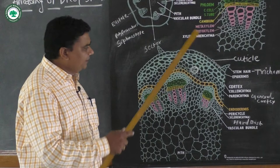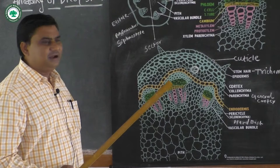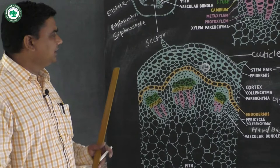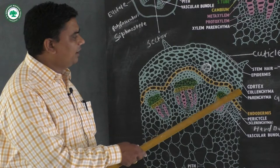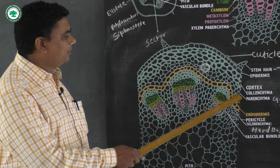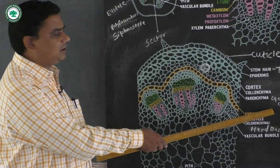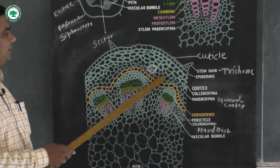Next to or below the epidermis, there is the particular hypodermis. Hypodermis cells are compactly arranged with no intercellular spaces, made up from collenchymatous cells. The hypodermis layer is three to four cell layers thick. Just below the hypodermis, there is the particular cortical region, also called the general cortex, which is made up from parenchymatous cells.